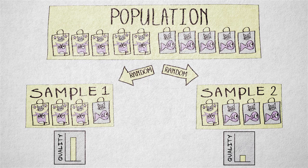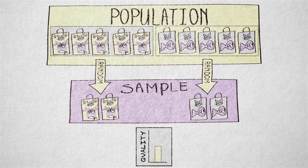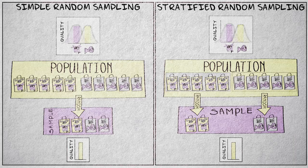Even a small overrepresentation of one food type can distort our overall estimate of food quality. Stratifying prevents this distortion. If the quality does not differ between food types, then overrepresentation of one food type will not distort the overall estimate, and stratification will not improve efficiency.